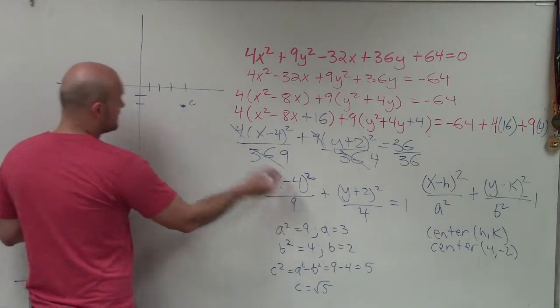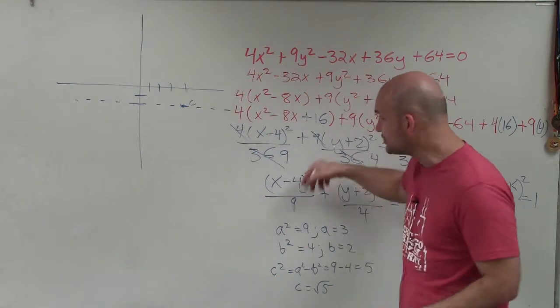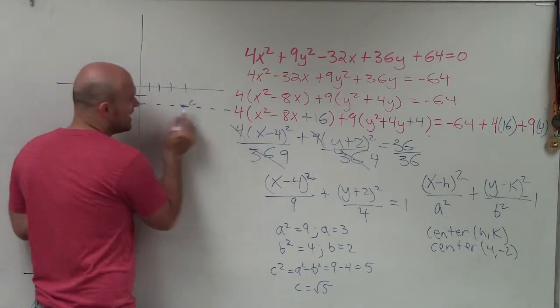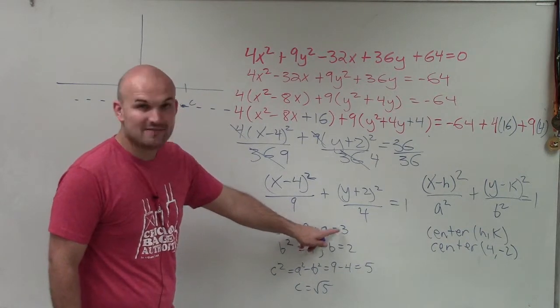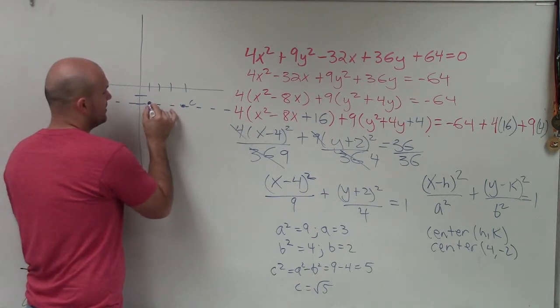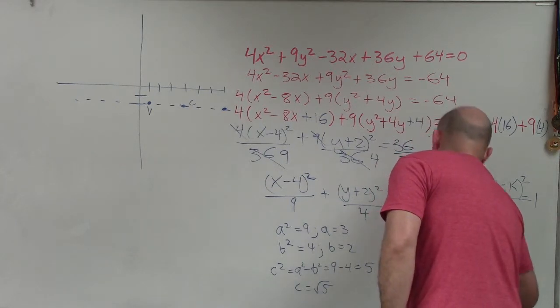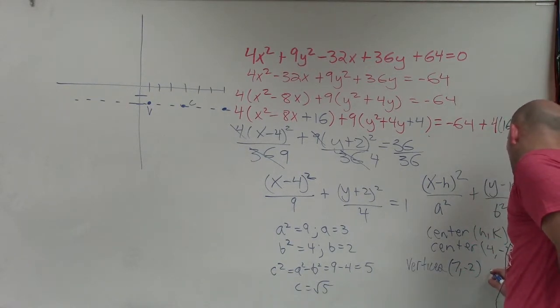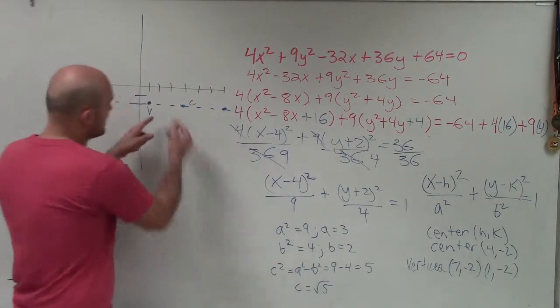Since the a is under x, the vertices and foci all lie on the major axis, and that major axis is horizontal. To find the vertices, I'm going along this line from the center. The vertices have a distance of a from the center. If I'm at 4, I need to go 3 to the right and 3 to the left. So 1, 2, 3, one vertices, 1, 2, 3, two vertices. My vertices are going to be 7, -2, and 1, -2. Notice my vertices and center all have the same y-coordinate because they all lie on this line.